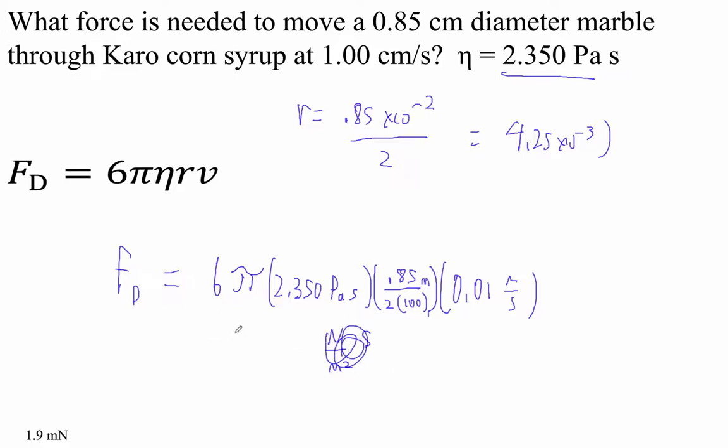Okay, so we're going to just calculate this. 6 times pi times 2.35 times parentheses, oh wait, it's just 4.25 e minus 3 is what this is, right?